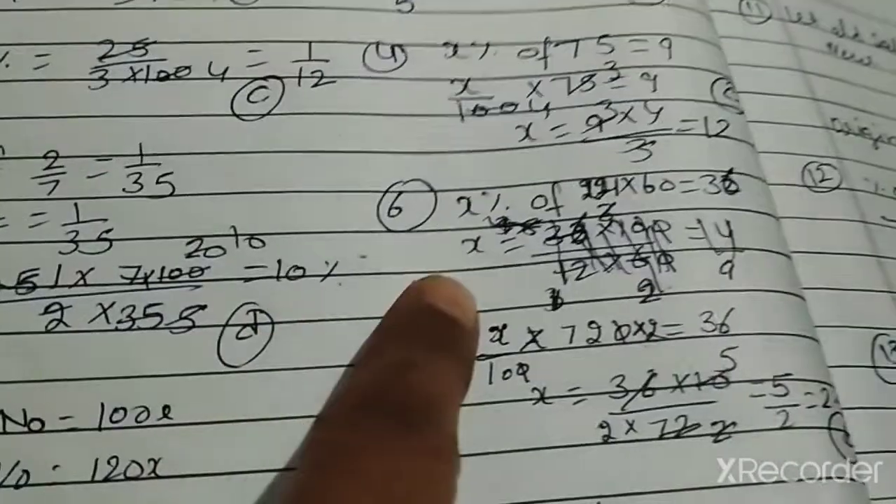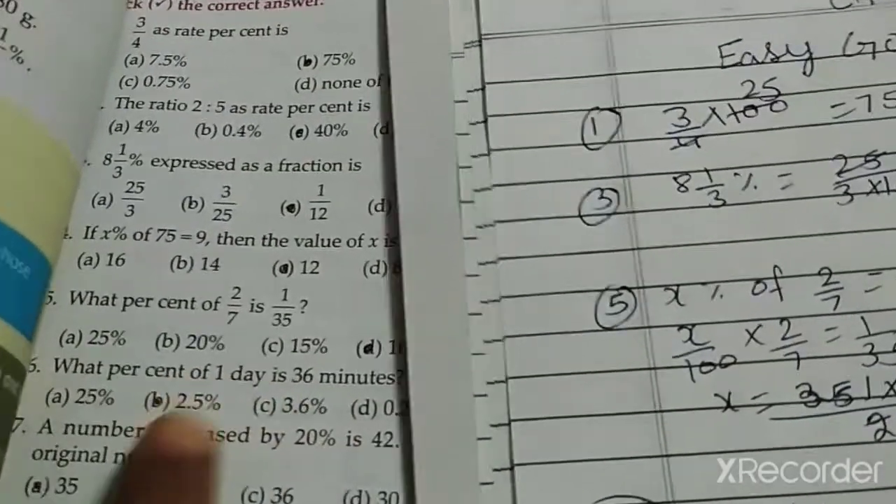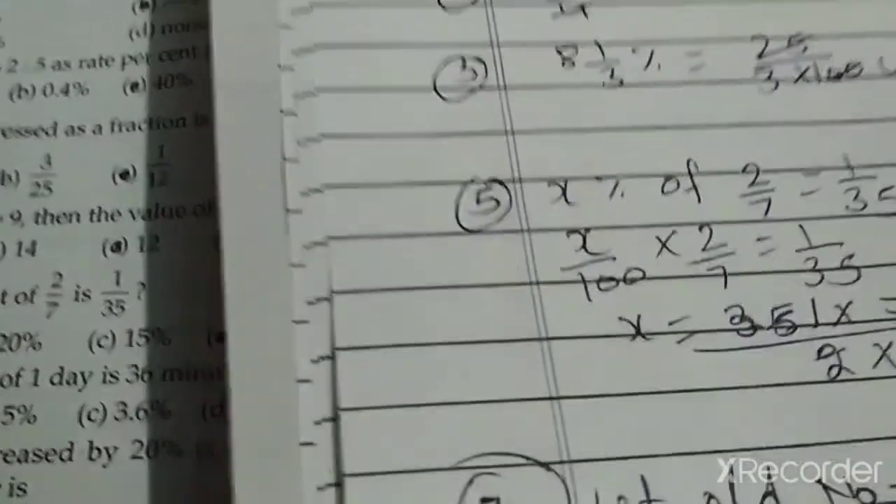Same, question number five. Question number six: one day ka aur 36 minutes ka percentage nikalna hai. So hum one day ko convert karenge per minute me, so one day me kitne honge? Twenty-four hours, so twenty-four multiply sixty. Aur percentage nikalenge, so x multiply twenty-four into sixty equal to thirty-six, simplify karlinge, x ki value a jayegi two point five.